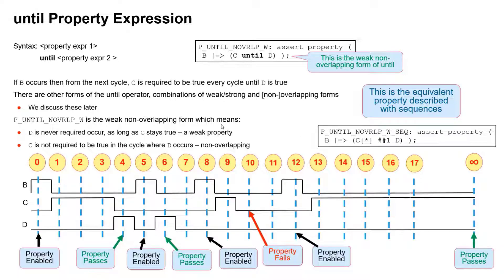Let's take a look at some passes and fails. B occurs, so the property is enabled — that's the left-hand side of implication satisfied. C has to be true the next cycle and all cycles up to the cycle where D occurs, but not necessarily including that cycle. So it does not matter what value C has at cycle four because D has occurred — the property passes at cycle four. B occurs again and D occurs the very next cycle. Remember the sequence equivalent: that's zero occurrences of C, so it doesn't have to occur. If D occurs, there is no obligation for C to be true in the same cycle because it's non-overlapping.